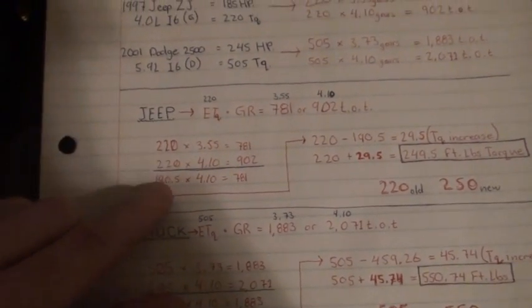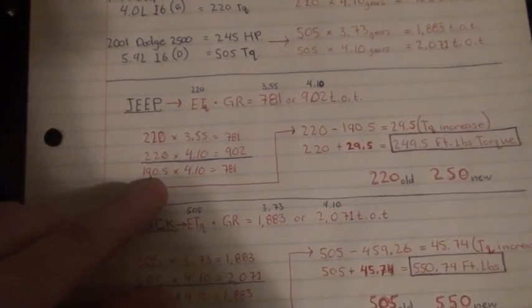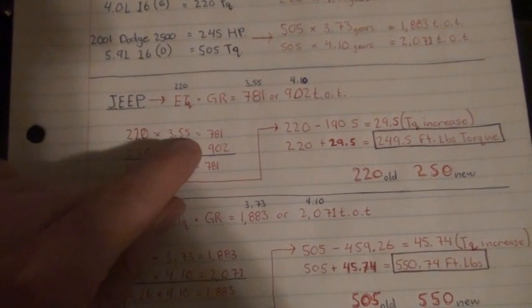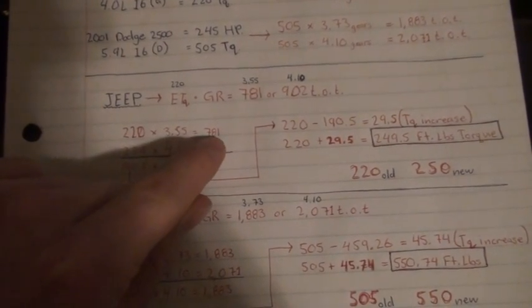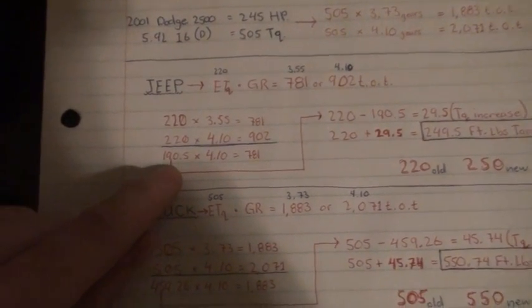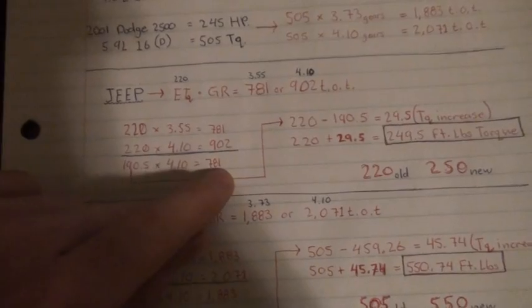Now, to figure out how much torque you've actually increased, you have to figure out what number times the new gears equals the old gear TOT. So, I figured that out to be 190.5 times 4.10 equals 781.